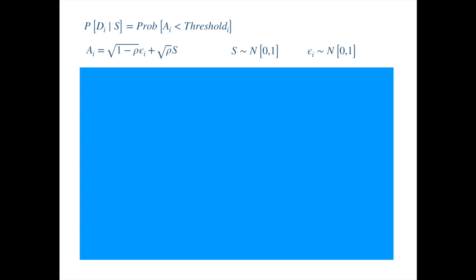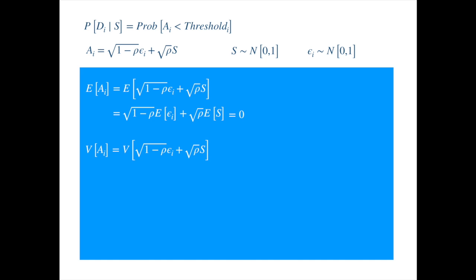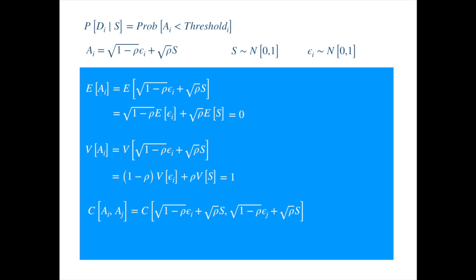Taking the expected value of both sides, and interchanging expectation and sum, we get zero, since both means are zero. Next, taking the variance of both sides, as both variables are independent we can interchange the sum and variance. Moving the constants out of the operator, taking constants out of the variance operator involves squaring them. As both variables have variances equal to 1, we get the result. For the covariance, as epsilon are independent of each other and of the systemic factor, we obtain a simpler expression which is just the variance of the square root of rho times s.